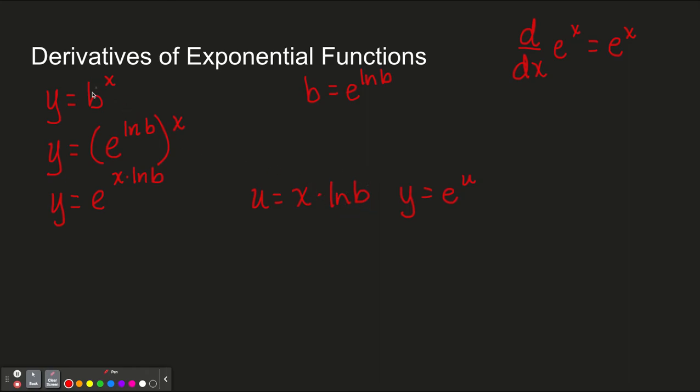So u equals x times the natural log of b. The natural log of b, remember b is the base. b is just a number. The natural log of b is just a number. So the derivative du dx is just the natural log of b because the derivative of x times a number is just the number.